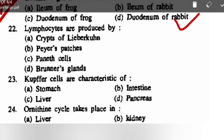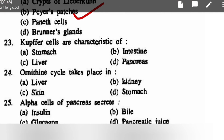Lymphocytes are produced by: crypts of Lieberkühn, Peyer's patches, Paneth cells, or Brunner glands — correct option is Peyer's patches. Kupffer cells are a characteristic feature of: stomach, intestine, liver, or pancreas — correct option is liver.